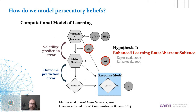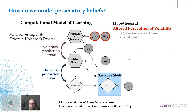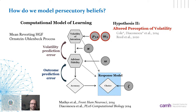The second hypothesis involved a model that additionally assumed the estimated volatility drifts toward an attractor point m3 over time — conceptualizing an altered perception of volatility in this population. The parameters of interest were the initial estimate of volatility and the point toward which it drifts over time.